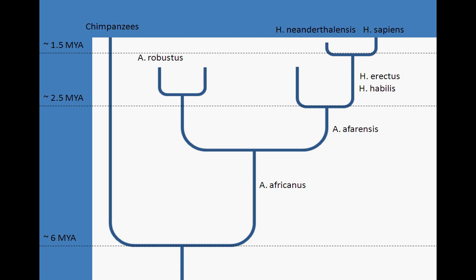Australopithecines were the first hominid species to arise following the human-ape split, which occurred somewhere between 5 and 7 million years ago. The other major hominid group contains members of the genus Homo, which first arose roughly 2 and a half million years ago. At times throughout history, multiple species from both of these groups walked the Earth together, competing for the limited resources available to them.